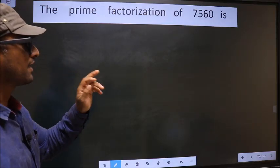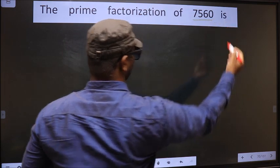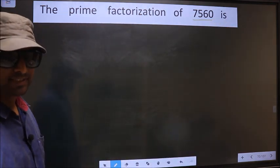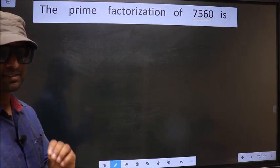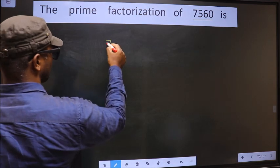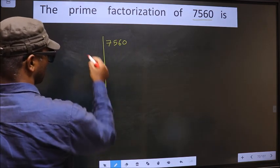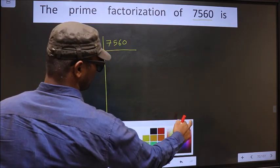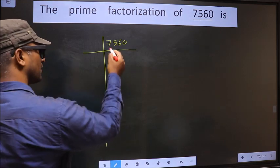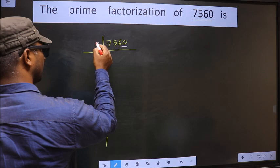The prime factorization of 7560. To do the prime factorization, first we should frame it in this way — that is 7560. For this number, the last digit is 0, so we take 5 here.